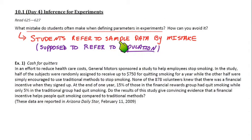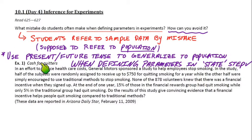How do they refer to the sample data by mistake? They speak in past tense. They say something like 'the volunteers who showed side effects,' which automatically refers to the sample data. To avoid it, just make sure you use present or future tense to generalize to the population when you're defining your parameters. That happens in the state step. So just avoid speaking in past tense.